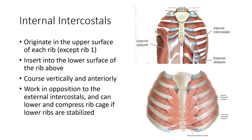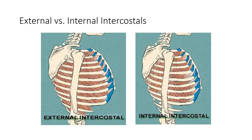For muscles that work more directly on the rib cage itself, the primary one is the internal intercostals. These muscles originate on the upper surface of each rib and insert into the lower surface of the rib above, coursing vertically and anteriorly — forming kind of an X pattern with the external intercostals. So they work in opposition to the external intercostals, lowering and compressing the rib cage if the lower ribs are stabilized. This image gives a clearer view of the striations of the external versus internal muscles, how they course, and the effect they would have on the ribs.